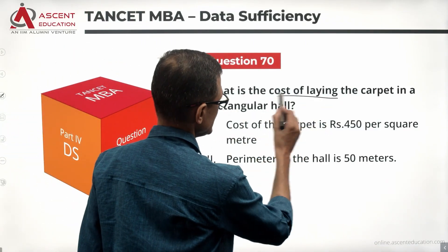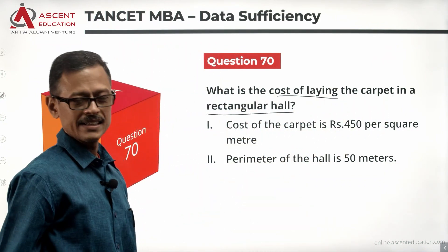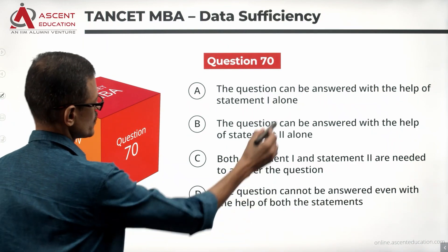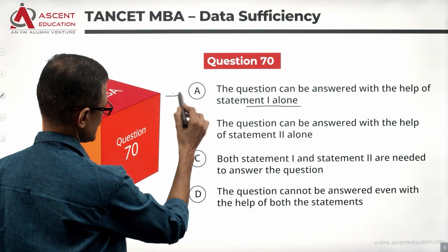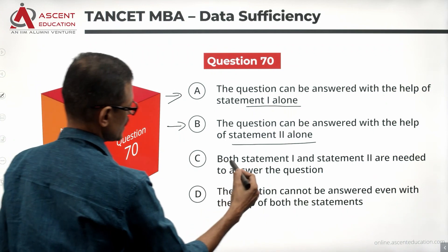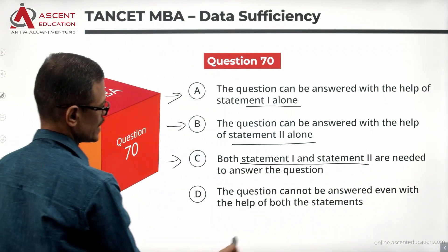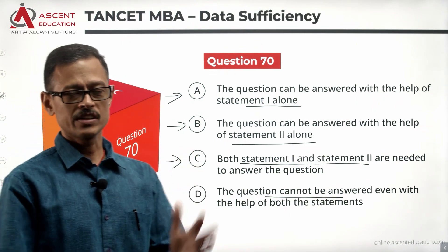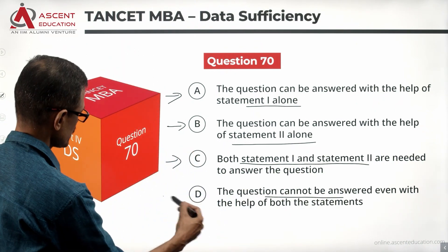The question asks: What is the cost of laying the carpet in a rectangular hall? The answer options are: A — Statement 1 alone is sufficient; B — Statement 2 alone is sufficient; C — Statements 1 and 2 together are sufficient; D — The question cannot be answered with the information in the statements, i.e., the data is insufficient.